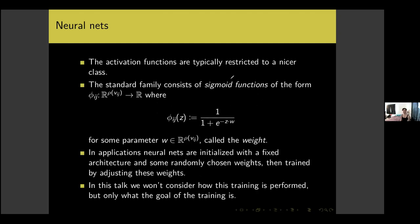Our activation functions are typically restricted to a nicer class of functions than just all functions. The standard family consists of sigmoid functions with a parameter w in the appropriate real vector space called the weight. In applications, neural nets are initialized with some fixed architecture and randomly chosen weights specifying the activation functions, and then trained by adjusting these weights to produce a different neural net whose activation functions also come from the same sigmoid family.